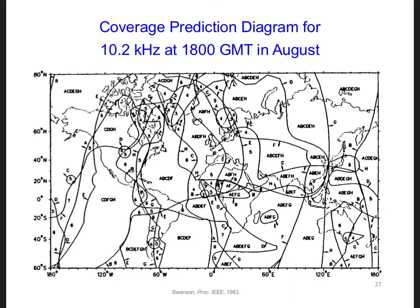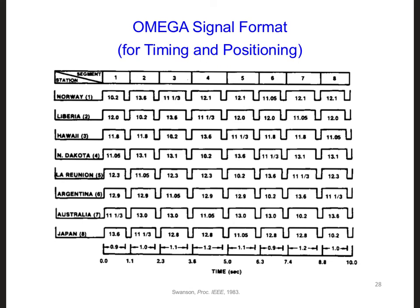Here is an example coverage map for a specific time of day — 1800 GMT — and time of year, in August, for the Omega system. In each region of this map, there are letters, and each letter corresponds to a transmitter. So for example, at this time of day and year, we could expect to receive signals from transmitters A, B, C, D, and F over much of the Atlantic Ocean. Each transmitter of the Omega system operated at a different frequency, so that a receiver could unambiguously identify the transmitter sending the signal and help ensure a signal could always be received.